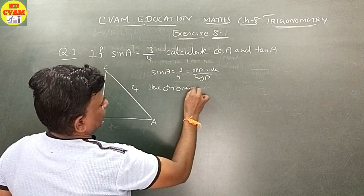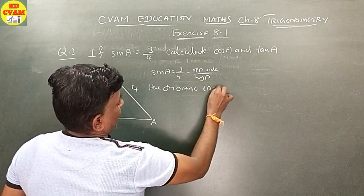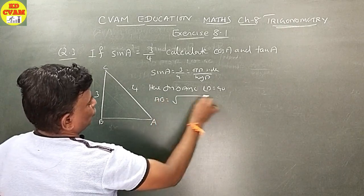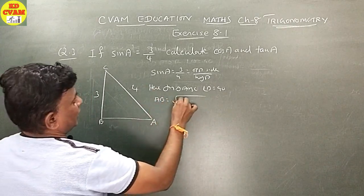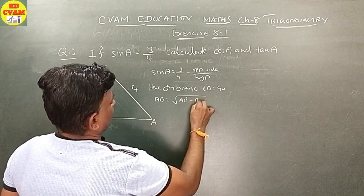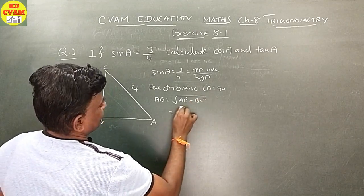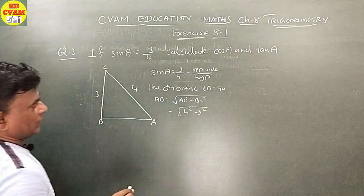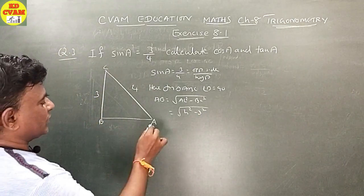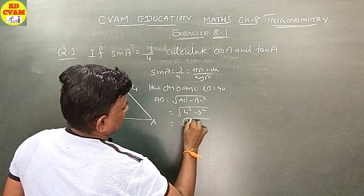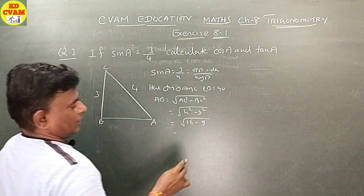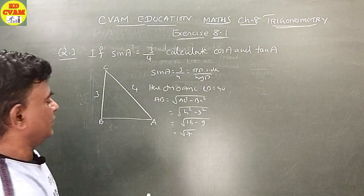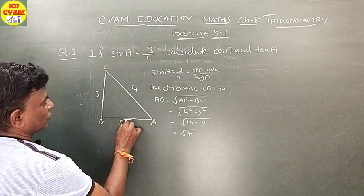In triangle ABC, angle B is equal to 90. Therefore, AB is equal to square root of AC square minus BC square. That is, square root of 4 squared minus 3 squared, equals square root of 16 minus 9, which equals root 7.